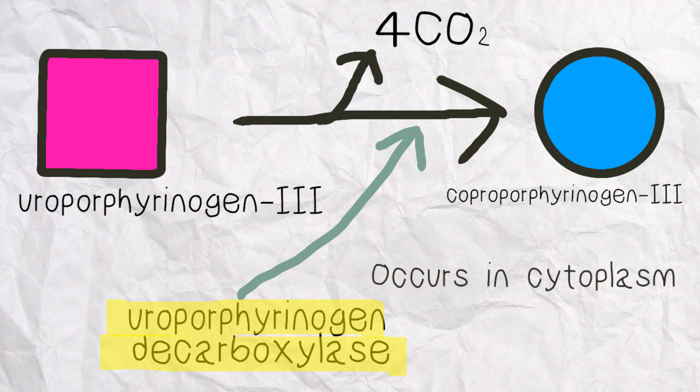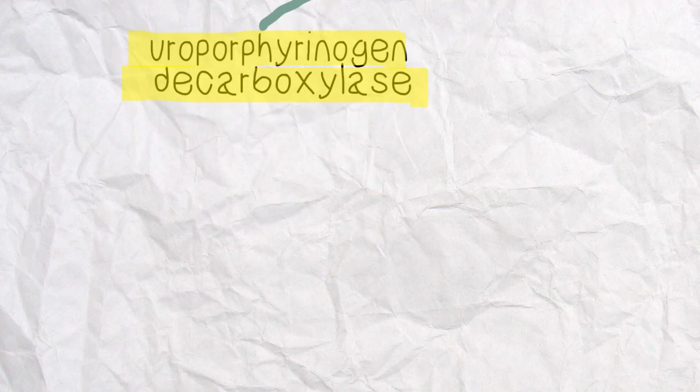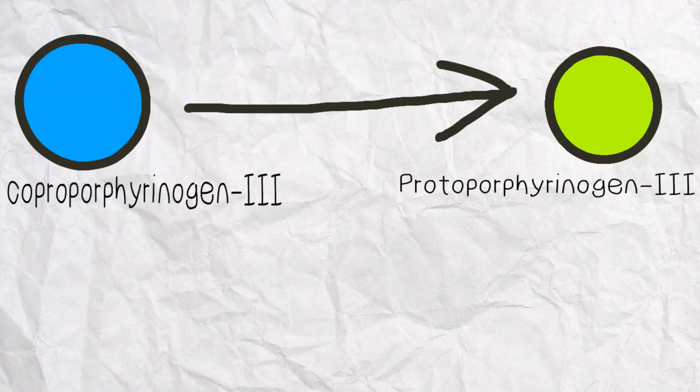At the same time, it releases four carbon dioxide molecules. Step 6: Coproporphyrinogen-III will then convert into protoporphyrinogen-III with the help of coproporphyrinogen-III oxidase.